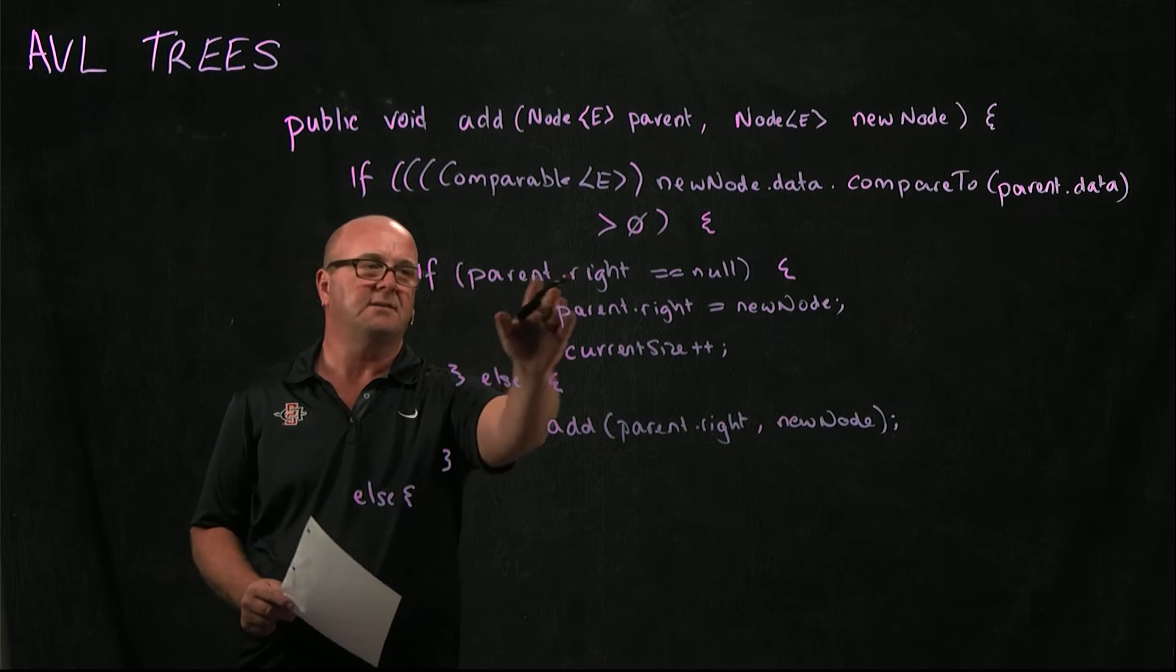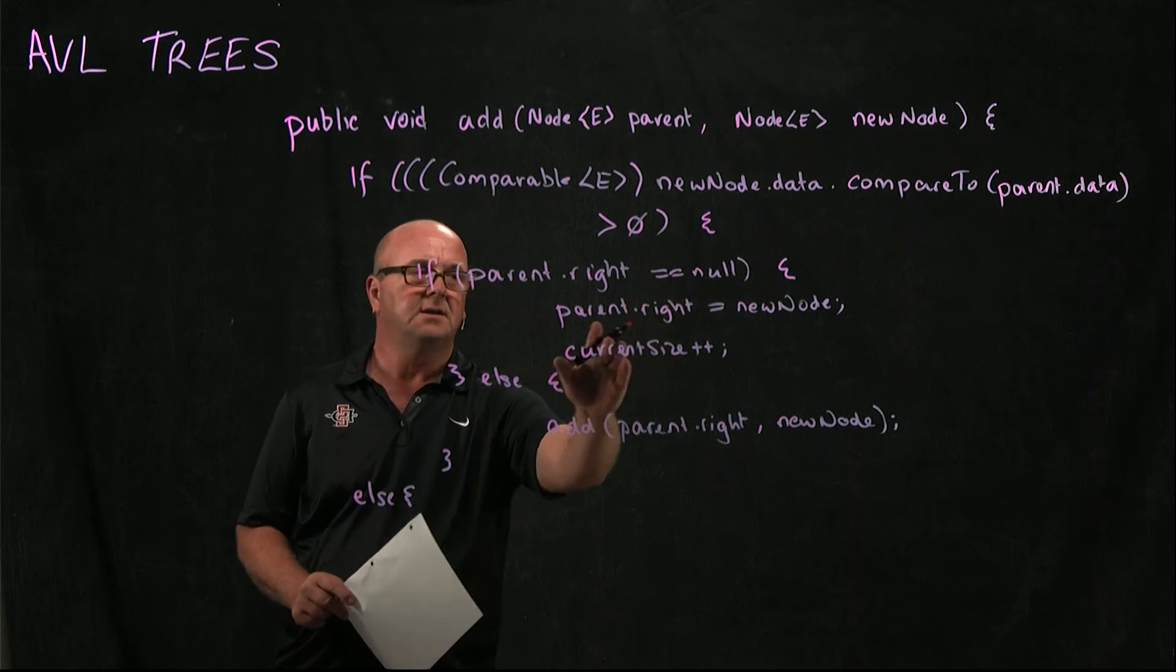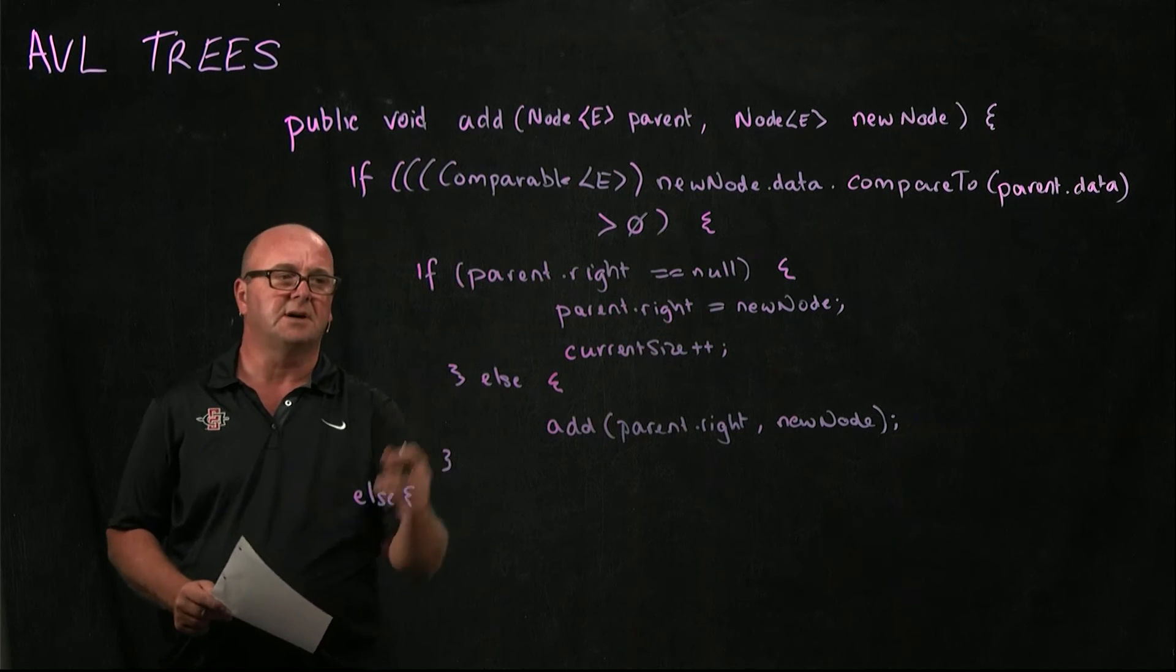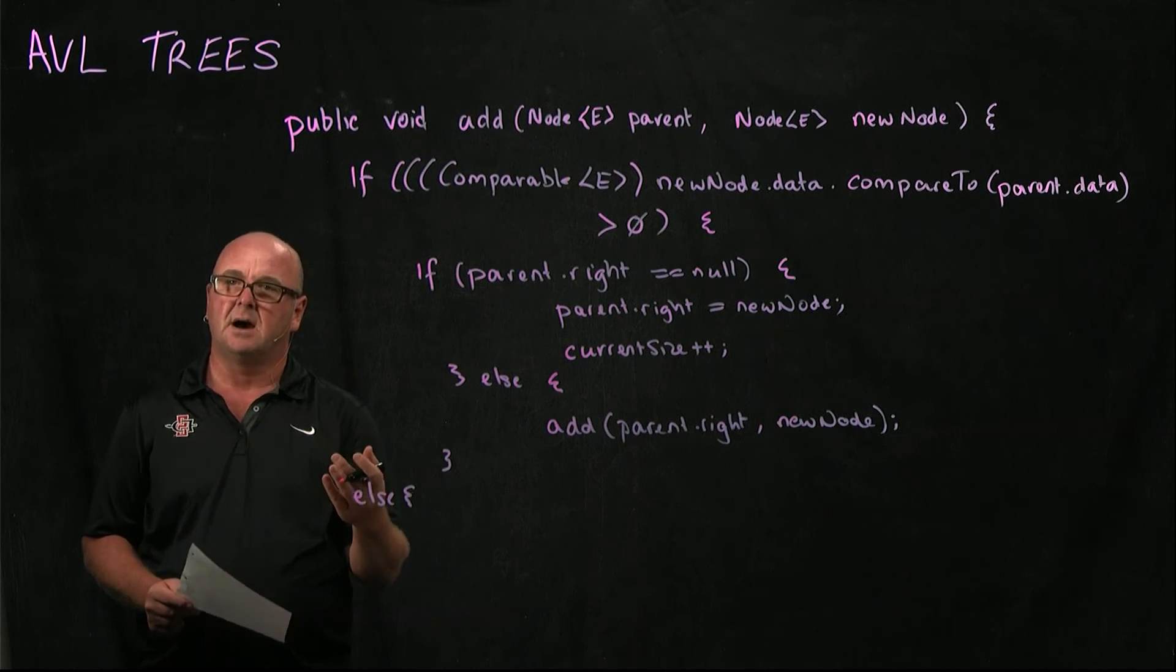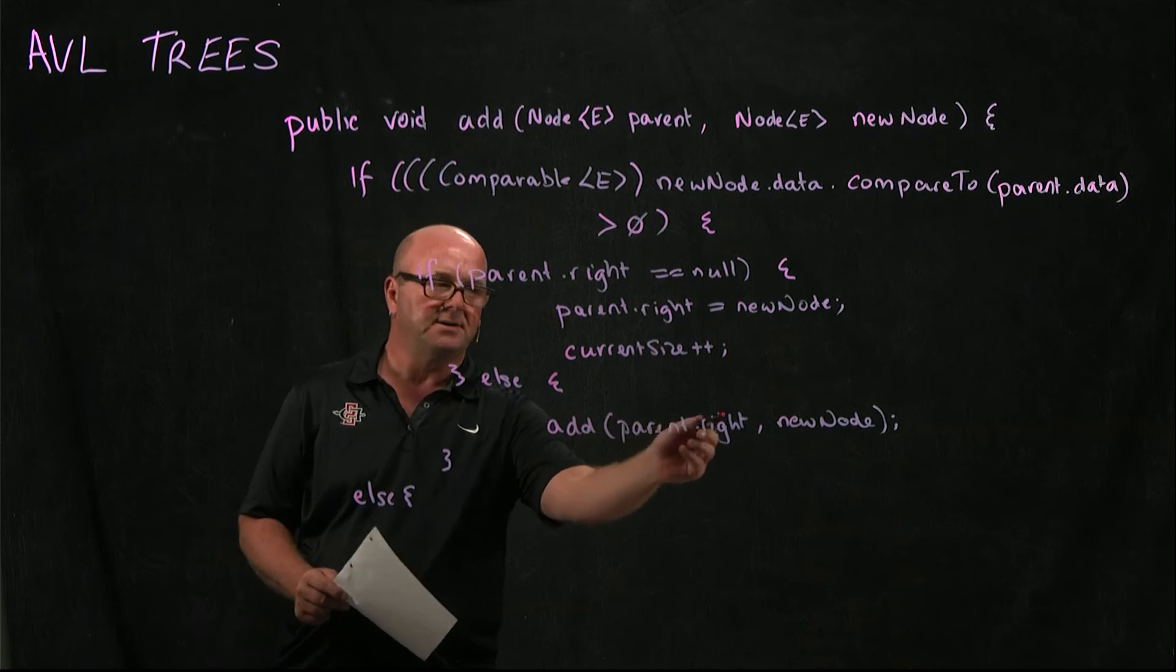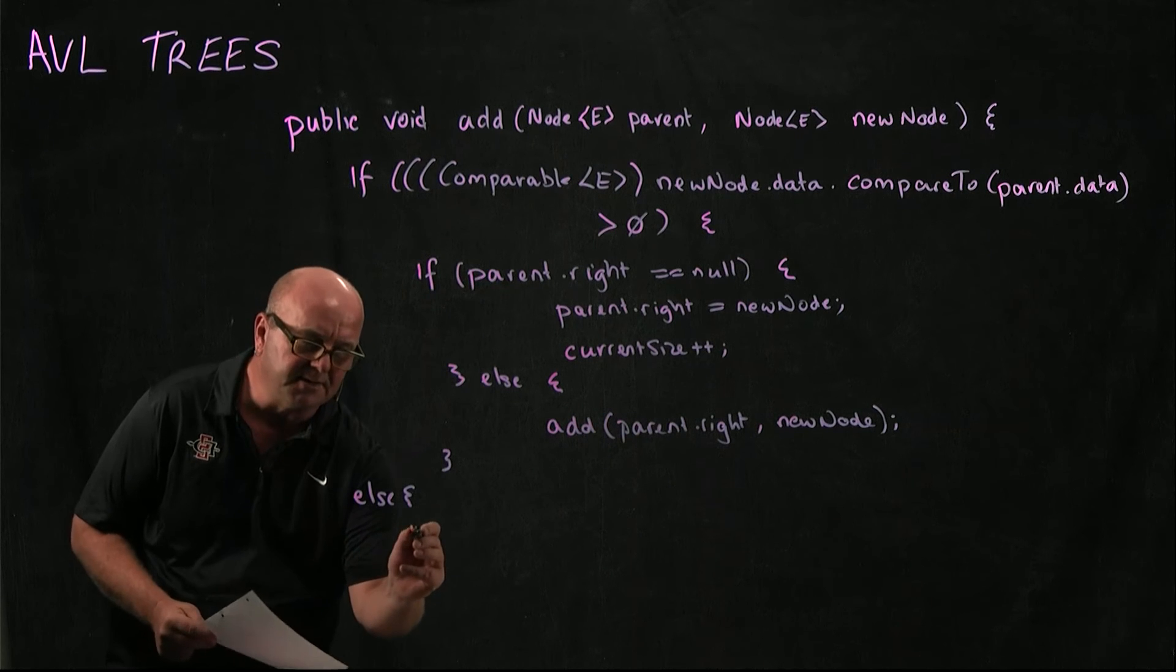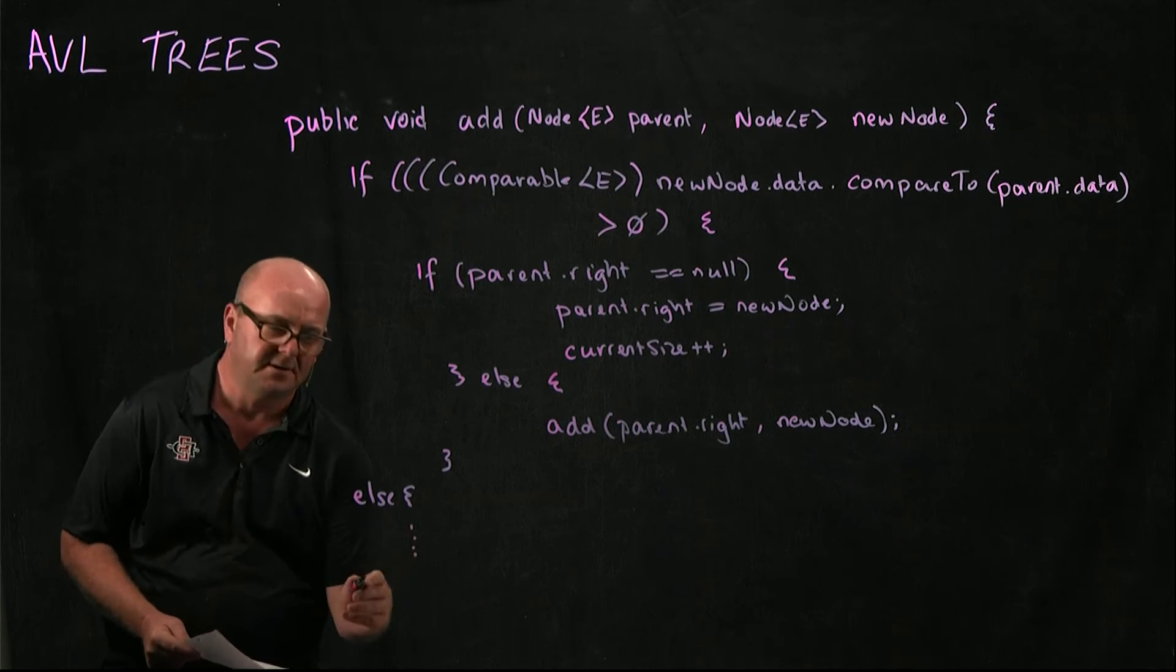So we're going to say if parent.left is equal to null, parent.left equals newNode, currentSize++. Otherwise, add parent.left, newNode. And so that code is going to go right here.